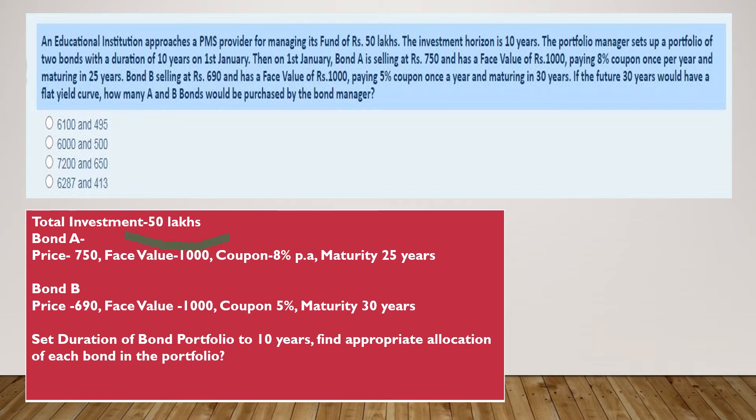Bond B is selling at 690 and has a face value of 1000, paying 5% coupon once a year and maturing in 30 years. The future 30 years would have a flat yield curve.